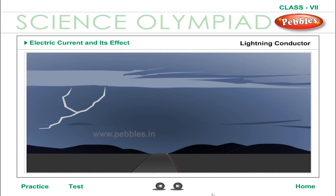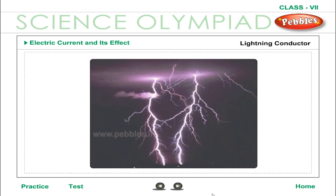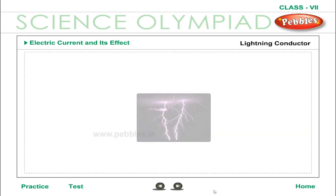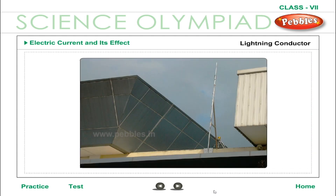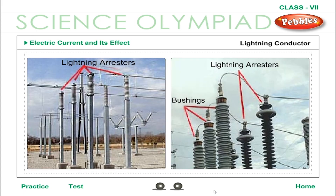The lightning conductor: tall buildings can be protected from lightning by a lightning conductor. A pointed metal rod is erected on the building; the other end of the conductor is connected to a thick metal rod, the far end of which is buried deep in the earth. The lightning conductor decreases the chances of lightning striking, and even if lightning does strike, the huge electrical charge is conducted through the metal rod to the earth, and thus the building is saved from any damage.